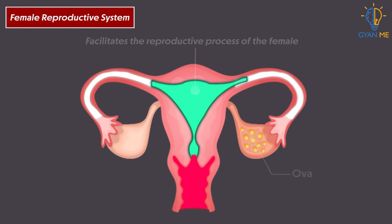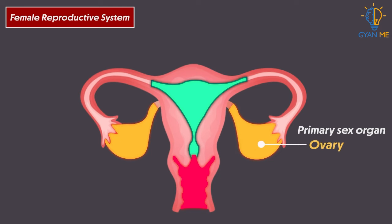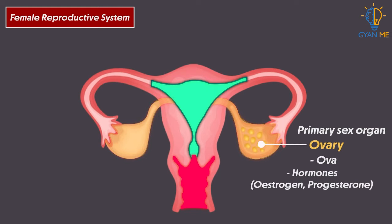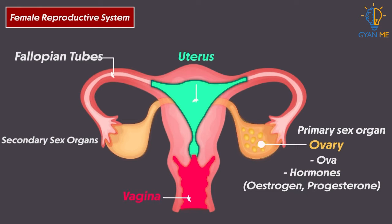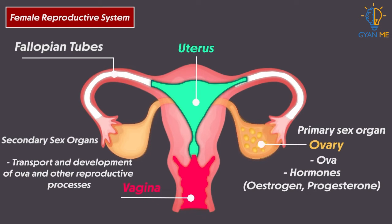On the same lines, primary sex organs of females, i.e. ovaries, produce ova and hormones oestrogen and progesterone, while secondary sex organs help in the transport and development of ova and other reproductive processes.